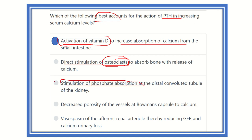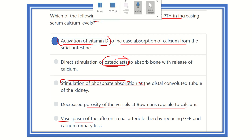Stimulation of phosphate reabsorption is not correct — we need calcium, not phosphate. Decreased porosity of vessels in Bowman's capsule is also not correct. Vasospasm is not correct either. Therefore, our final answer is activation of vitamin D to increase absorption of calcium from the small intestine.